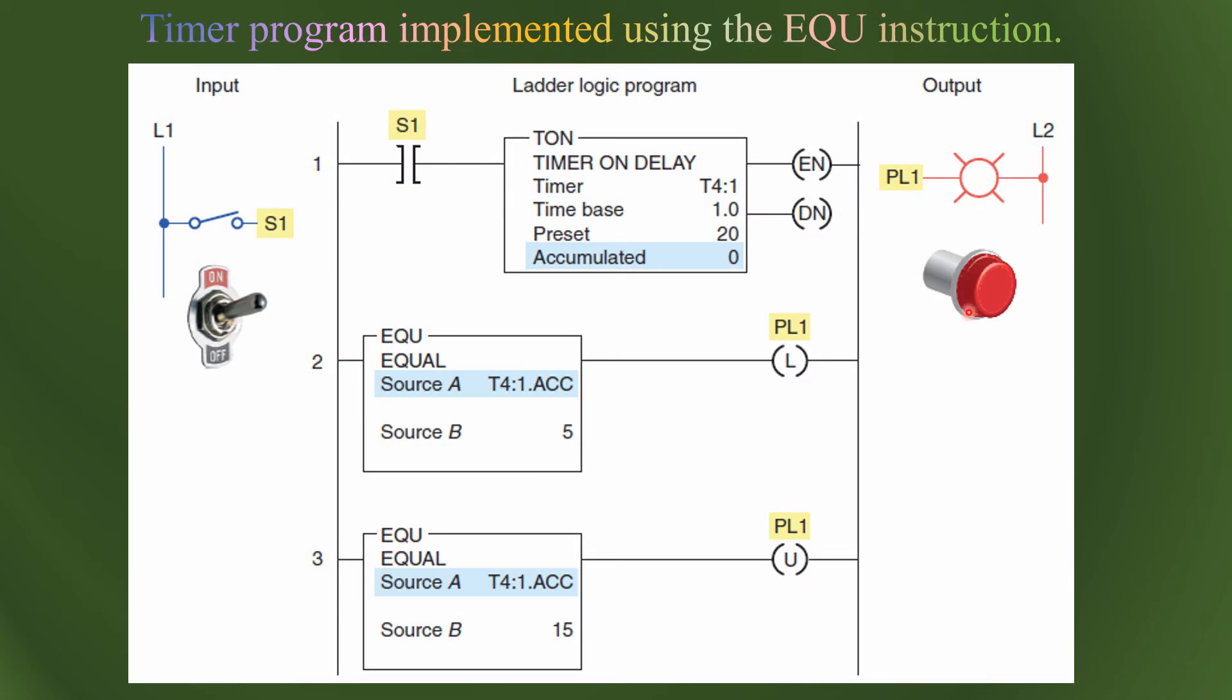On this page, we are going to discuss a PLC timer program which will make the pilot light turn on after running the program for 5 seconds, and then it will remain on for 10 seconds from 5 to 15 seconds. Then because of the unlatch, this one will become unlatched. The latch will make it permanently on until the pilot light is off.